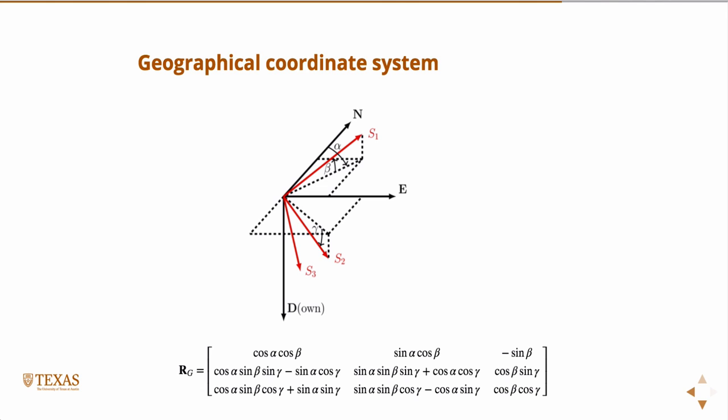So, with that, if we know, we're given S1, S2, and S3, we can figure out what the three angles are. We can then use this equation to rotate it back into the geographic frame.